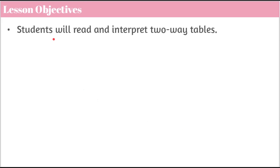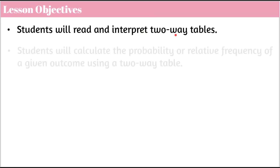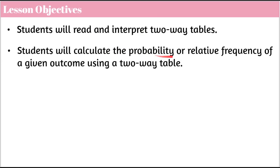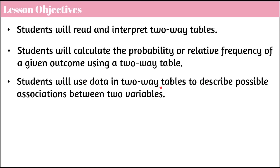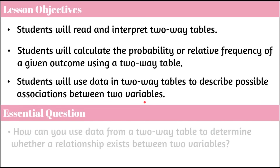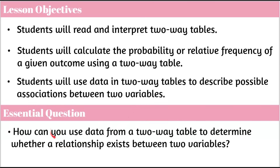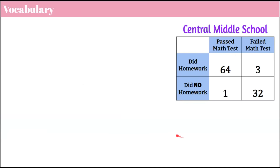In this lesson, our objectives are that you will read and interpret two-way tables. You will also be able to calculate the probability or relative frequency of a given outcome using a two-way table. You will use data in the two-way tables to describe possible associations between two variables. How can you use the data from a two-way table to determine whether a relationship exists between two variables? Let's begin by reviewing some vocabulary.